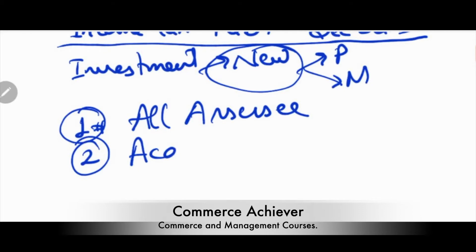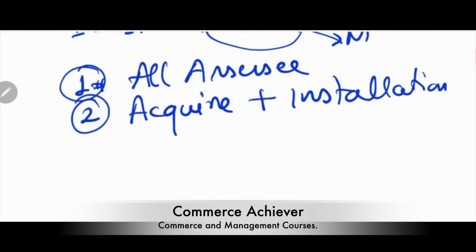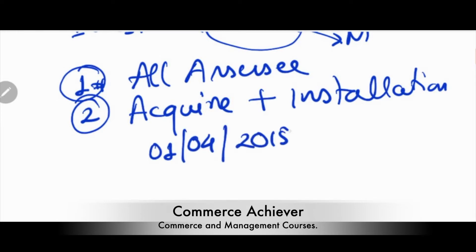Under Section 32 AD, you have to acquire, purchase, and install new plant or machinery. Both the purchase and installation must be completed within the duration of 1 April 2015 to 31 March 2020.